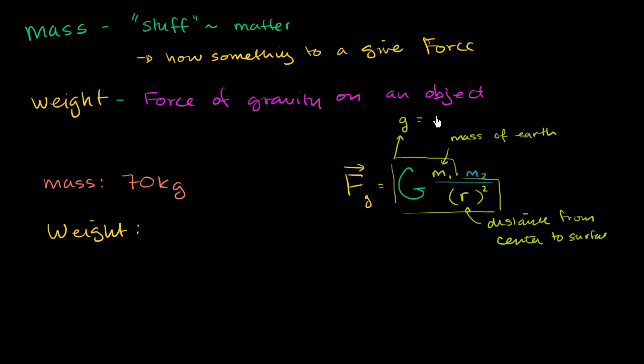And lowercase g is, and I'm just rounding it here, 9.8 meters per second squared. So the force of gravity for something near the surface of the Earth is going to be this quantity right over here, times the mass, times its mass.